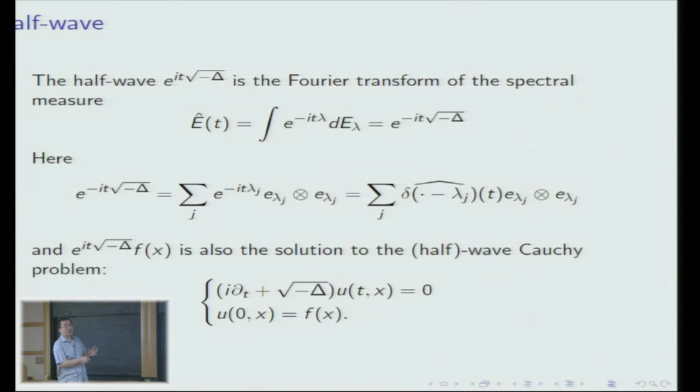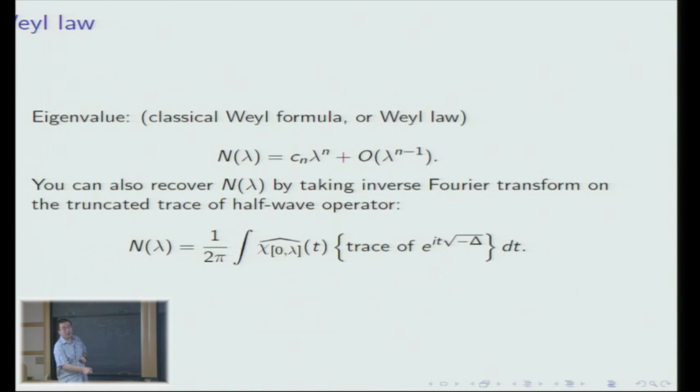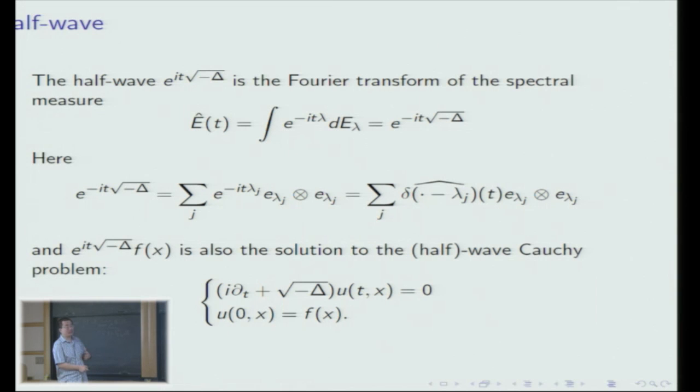This operator is also called the half-wave operator because it is the fundamental solution to the half-wave Cauchy problem. Some mathematicians prefer to use the cosine transform instead of the Fourier transform, which is roughly speaking the real part of this operator, giving the fundamental solution to the wave equation. Therefore there is a strong connection between the wave equation and eigenfunction estimates.